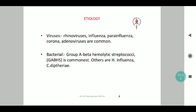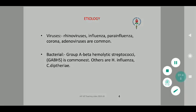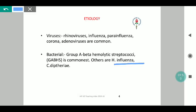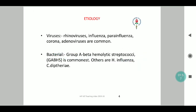If we consider the etiology, most common remains viral — rhinoviruses, influenza viruses, para-influenza viruses, coronaviruses and adenoviruses are the most common. Amidst the bacterial spectrum, group A beta-hemolytic streptococci is the most common, followed closely by Haemophilus influenzae and Clostridium diphtheriae. H. influenzae does have a vaccine, so due to good vaccination efforts this has come down, whereas group A beta-hemolytic streptococci remains an important bacterial cause.